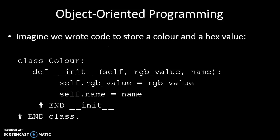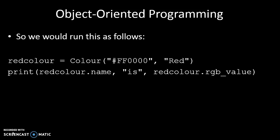So imagine we wrote some code to store a color and its hex value. We have class Color — its INIT takes in a red-green-blue value and its name. Colors are generally defined in computers by a combination of red, green, and blue. An amount of red, an amount of green, an amount of blue tells you what color it's going to be, and it takes in a name as well. So if we created a variable called redColor, it's of type Color, taking in its RGB value, and its name is red.